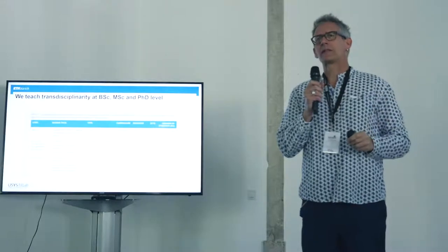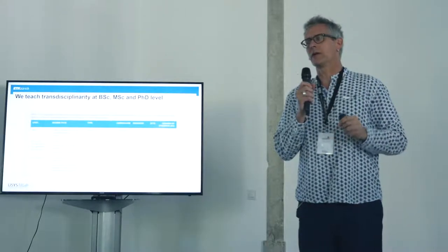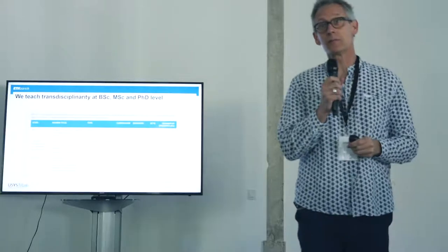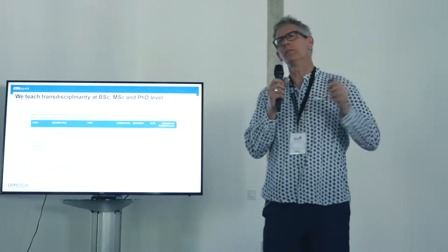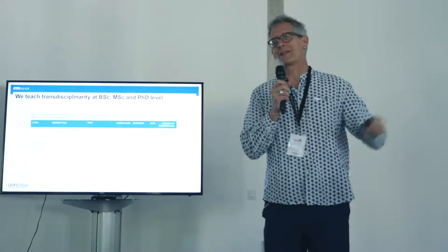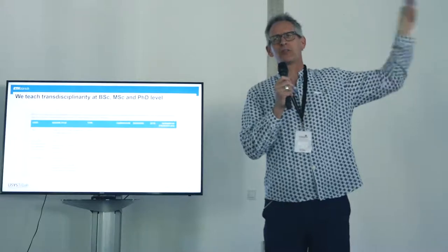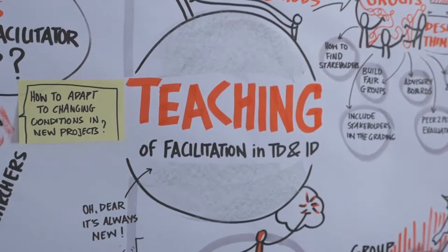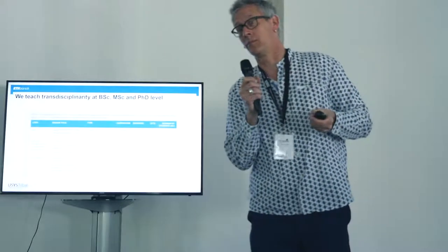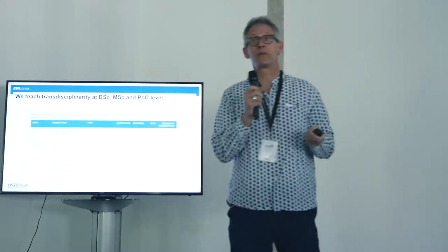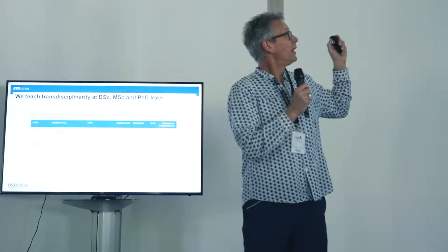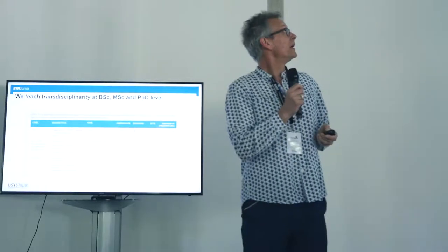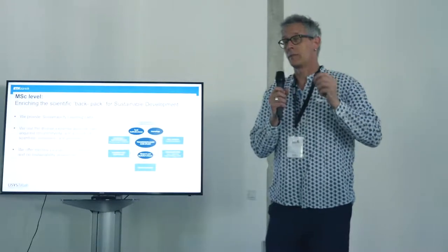At the bachelor level, within the environmental science curriculum, there is a one-year course with all 150 students worth 10 credits. On the master level we have a case study — always case studies — which is an elective course students can choose. At the PhD and postdoc level we have two courses as well.